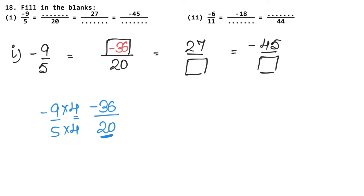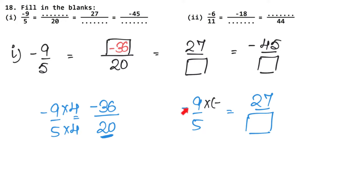Now let's see. This block equals minus 9 upon 5, which equals 27 upon block. Here the numerator has a minus sign but 27 is a positive value. So we multiply by minus 3. Minus times minus is plus, so 9 times 3 is 27 — that matches. For the denominator: plus times minus is minus, and 5 times 3 is 15, so the answer here is minus 15.